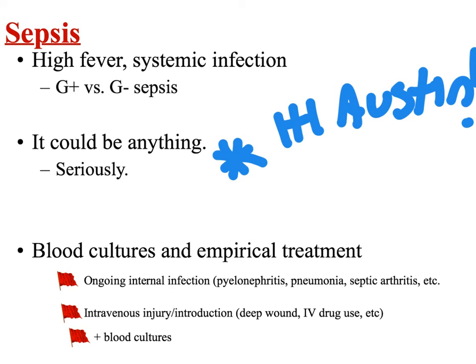If a patient appears to have clinical sepsis, you want to pull blood cultures and start empiric treatment before you get them back — even though automated blood cultures can take 10, 12, 18 hours, and that time frame can be the difference between a treatable patient and a dead one. Since you don't know if you're dealing with gram-positive or gram-negative sepsis, you usually start them on two courses of antibiotics simultaneously to cover both.